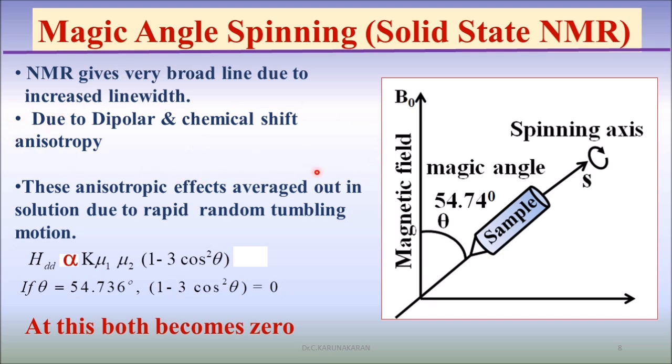They will give isotropic NMR spectrum due to rapid tumbling motion.